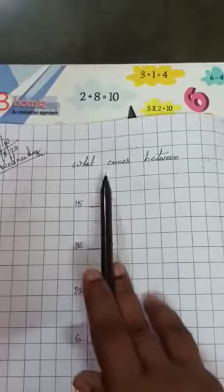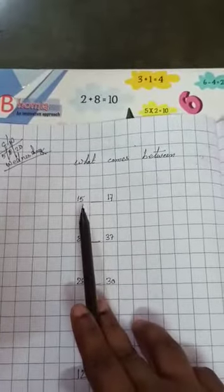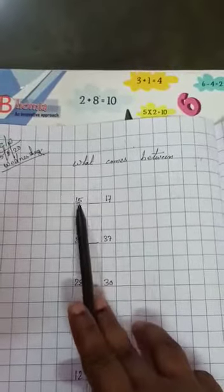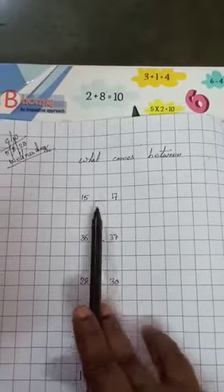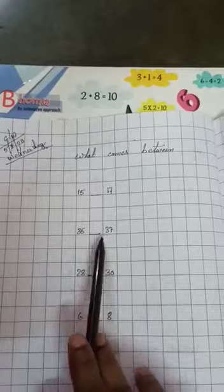You will write here heading what comes between 15, here it will be 15-17, here will be 16, 35, 36, 37.